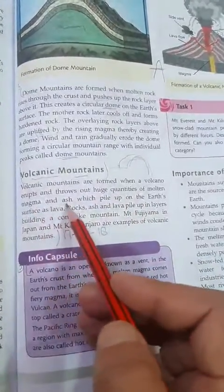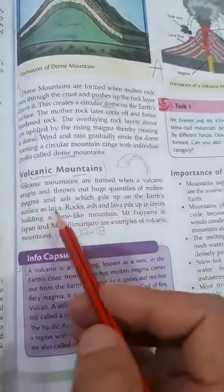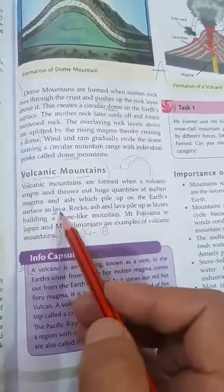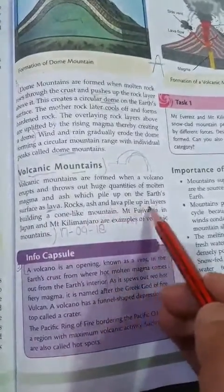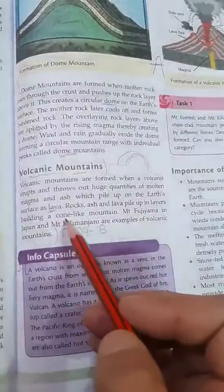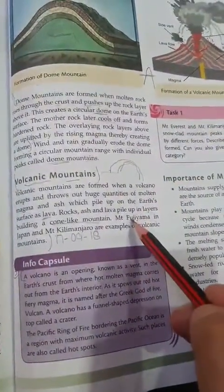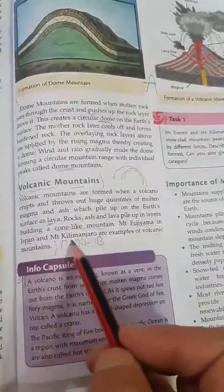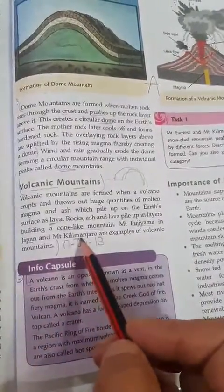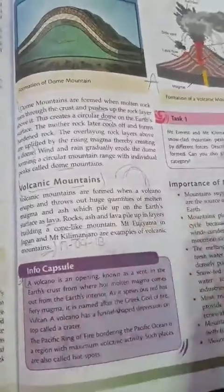which pile up on the earth's surface as lava. The rocks, ashes, and lava pile up in layers, building cone-like mountains. Mount Fujiyama in Japan and Mount Kilimanjaro are examples of volcanic mountains.